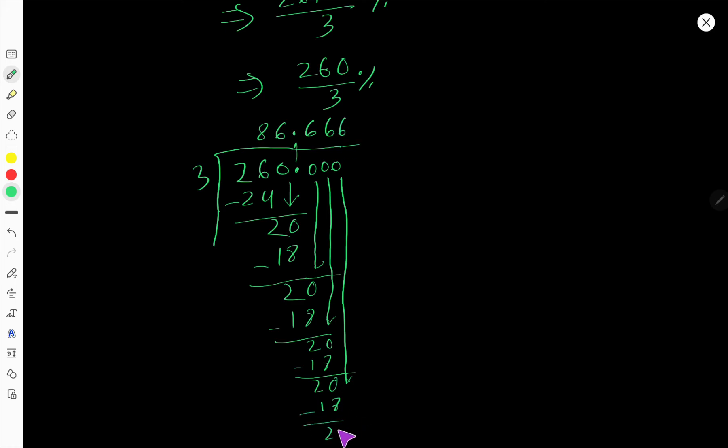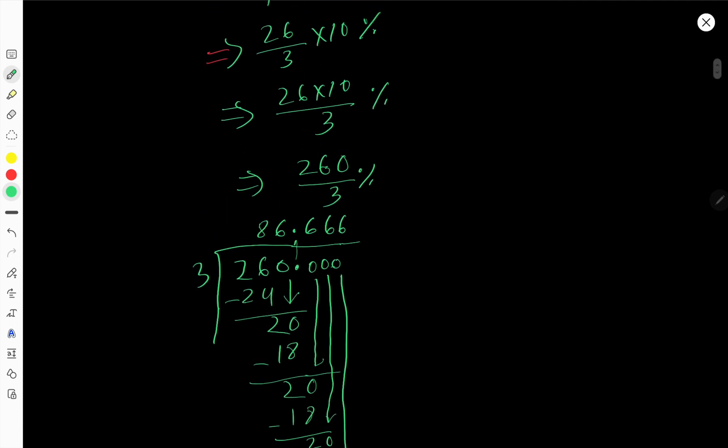This process will continue, there is no ending. You can round this result up to 2 digits here, so 86.67.